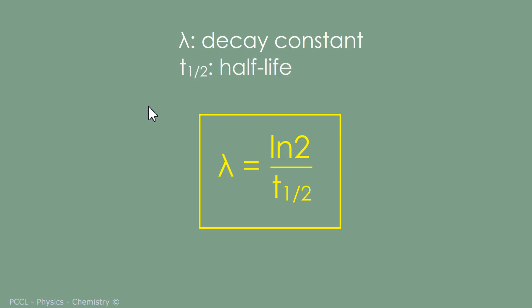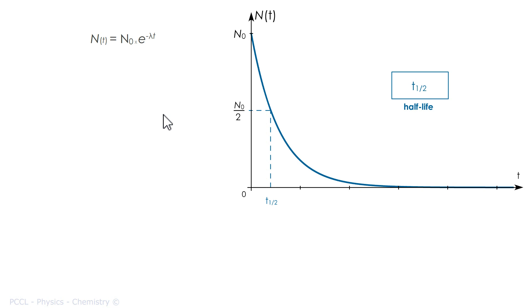I wanted to discuss with you the relation between the constant lambda and the half-life. Here is the expression of our function N as a function of t, the solution of the differential equation. I replace N by N₀/2, corresponding to replacing t by the half-life. N₀/2 corresponds to t sub one-half.